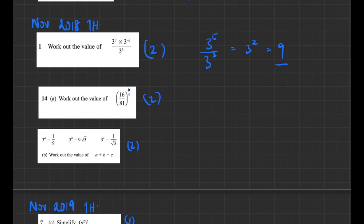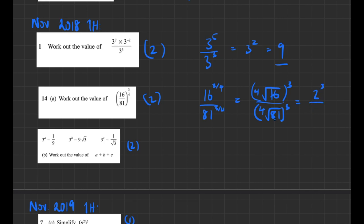For (16/81)^(3/4): distribute the power to both numbers — 16^(3/4) over 81^(3/4). The 4 is the root, the 3 is the power. Fourth root of 16 is 2, so 2³ = 8. Fourth root of 81: 3 × 3 × 3 × 3 = 81, so the fourth root is 3, giving 3³ = 27. Final answer: 8/27. You need to know fourth roots of common numbers for non-calculator papers.